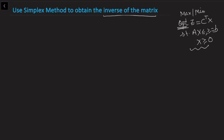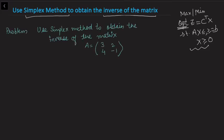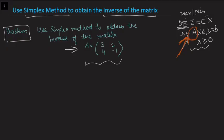When we are only given a matrix and want to find its inverse using the simplex method, consider this problem: I want to use the simplex method to obtain the inverse of matrix A. If you compare this matrix A to the usual simplex method setup, only the coefficient matrix A is given — we have no objective function, no right-hand side, and no decision variables.